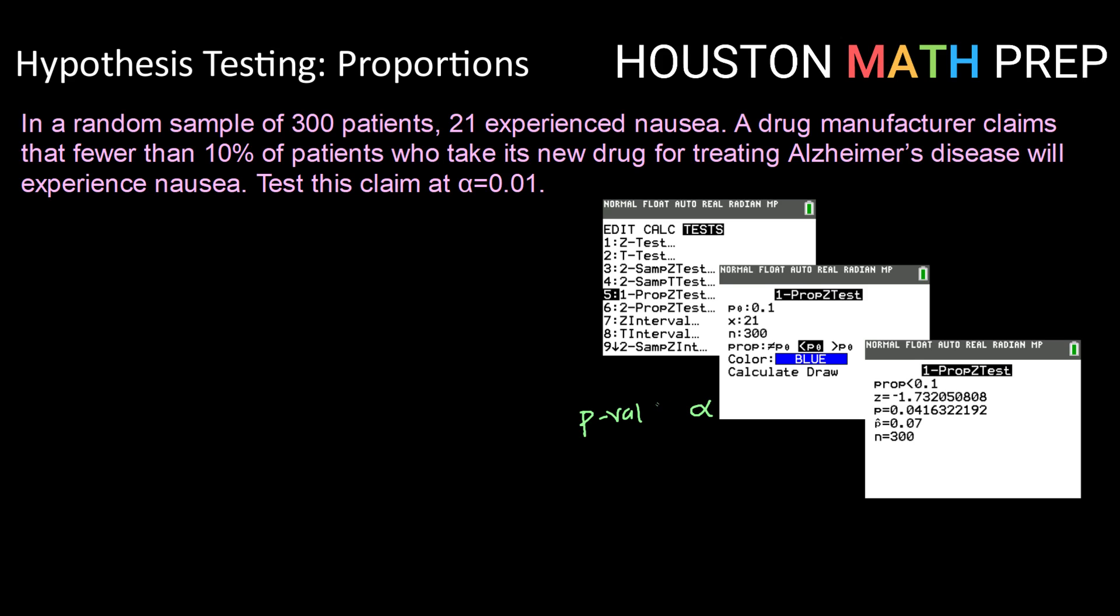So if that p-value is greater than or equal to alpha, if we have a relatively large probability compared to our significance level, then that means this seems not too odd. So we're going to fail to reject that null hypothesis.